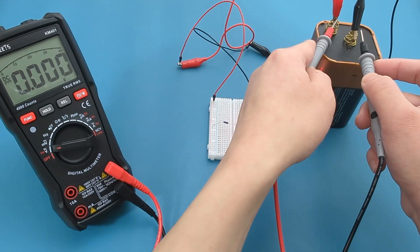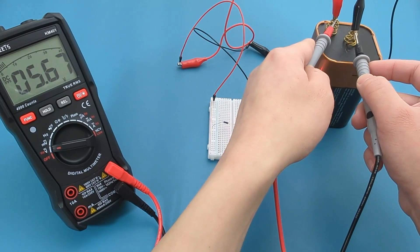As shown in the multimeter, the reading for the battery is around 5.6 volts.